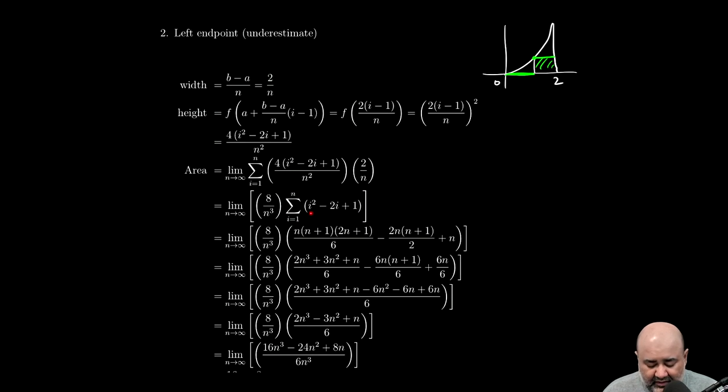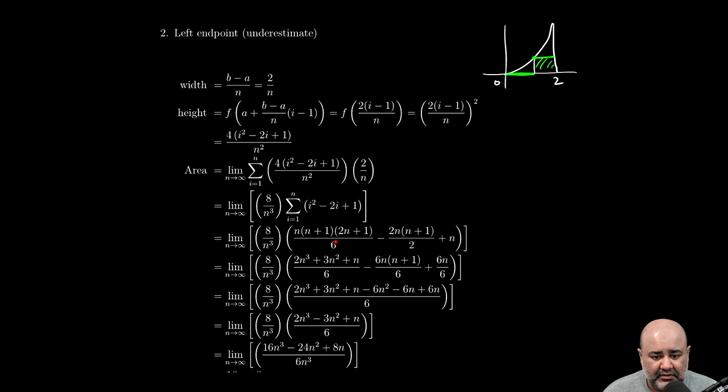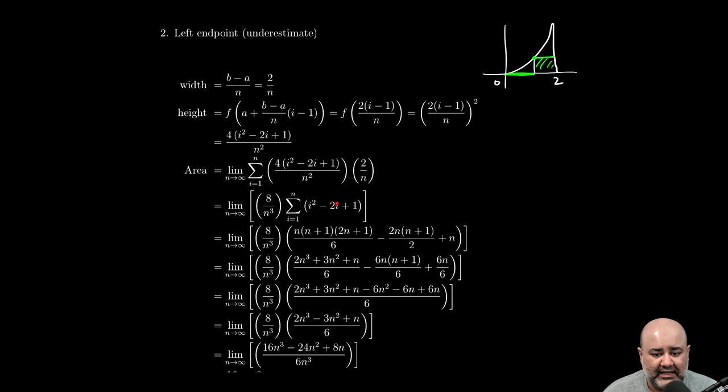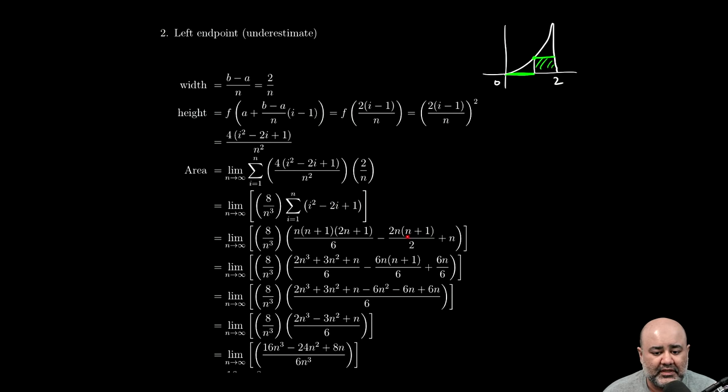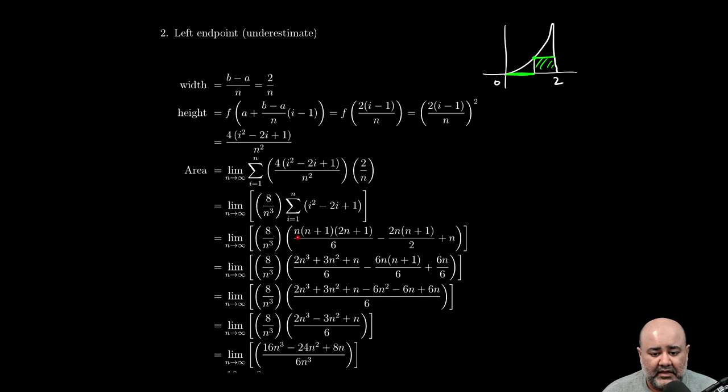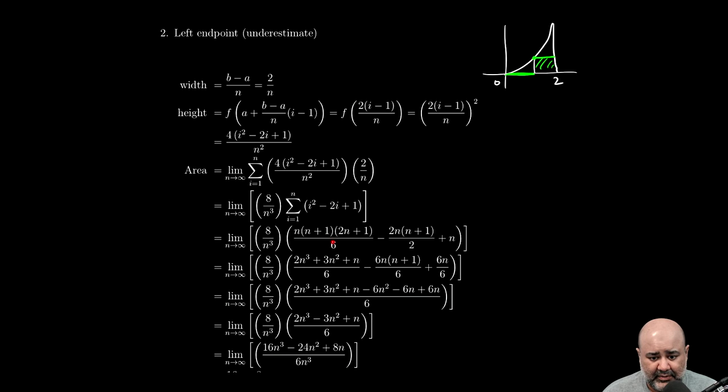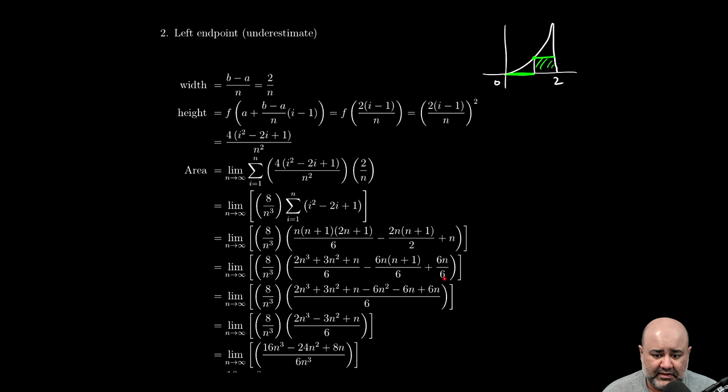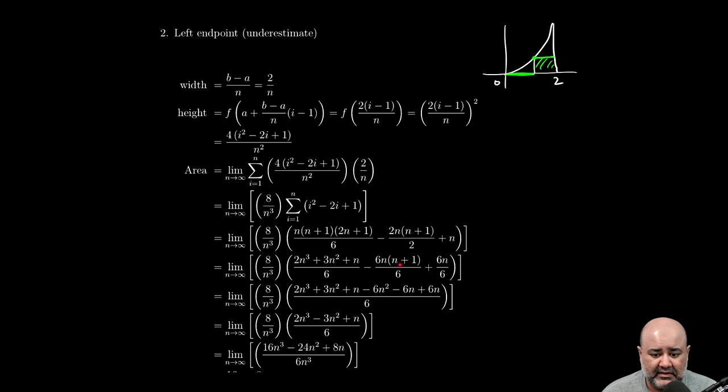And again, without knowing the formula for the summation of i squared, which is this expression, there's no way to solve this question. You can't go from here to the answer unless you know this formula. You can't go from 2i to here unless you know the formula for i. This requires then us to convert all of these into a single denominator or a common denominator. So this has a denominator of 6. I'm going to keep this as it is. I'm going to multiply this by 3 over 3 so that the denominator becomes 6. I'm going to multiply this by 6 over 6 so that the denominator becomes 6.